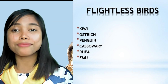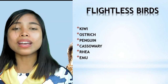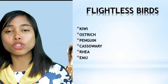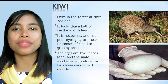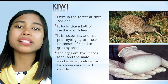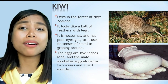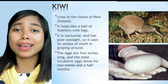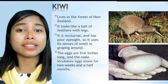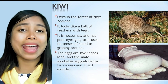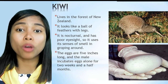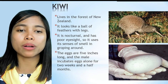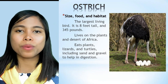Flightless birds include the kiwi, ostrich, penguin, cassowary, rhea, and emu. The kiwi lives in the forests of New Zealand. It looks like a ball of feathers with legs, is totally nocturnal, and has poor eyesight, so it uses its sense of smell to find its way around. Its eggs are five inches long, and the male incubates eggs alone for two and a half months.